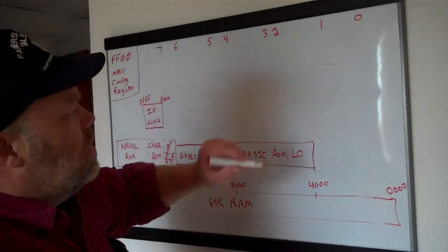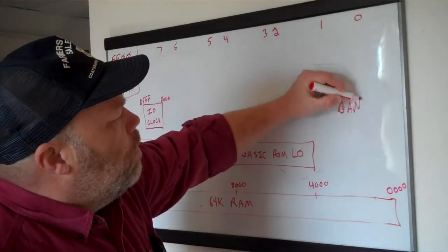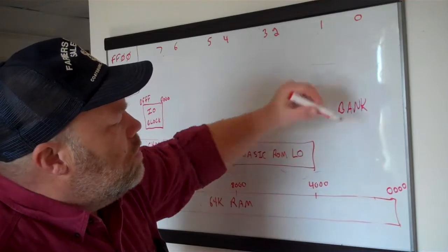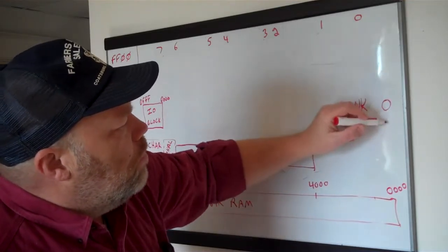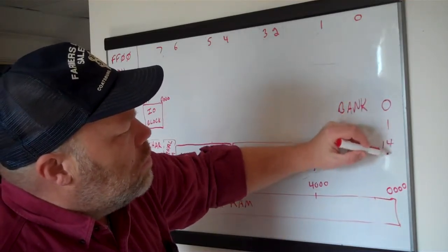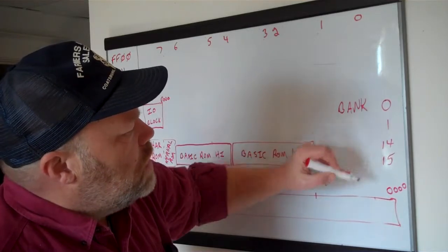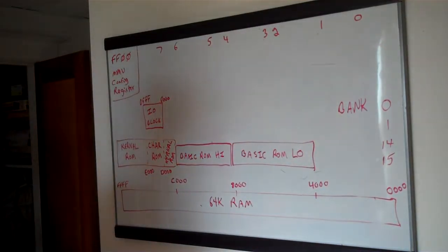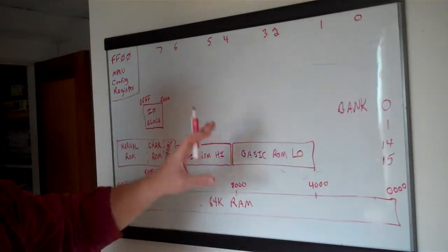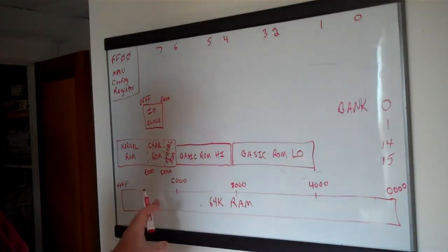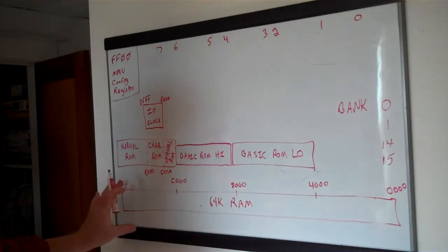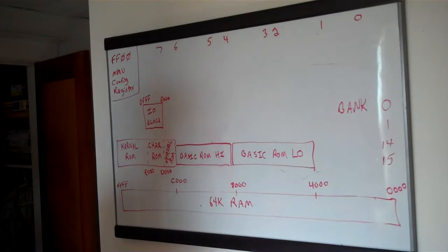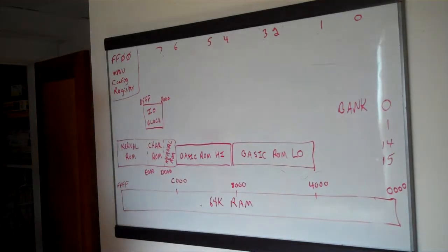In BASIC there's a BANK command where you can give a number from 0 to 15. The ones that matter are 0, 1, 14, and 15. Those set up particular memory configurations. Sometimes we're talking in terms of setting up a particular configuration of memory; other times we're talking about an actual physical selection of chips that form a bank. I'll try to be clear about which one I mean.